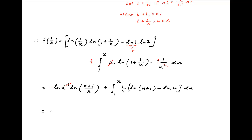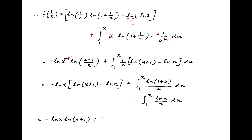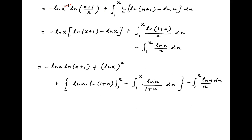Using properties of logarithms, this becomes −ln(x) times [ln(x+1) − ln(x)], plus the integral broken into two components: the first is the integral from 1 to x of ln(1+u)/u du. Integrating the next term by parts, we get (1/u), i.e., ln(u), times ln(1+u) from 1 to x, minus the integral from 1 to x of ln(u) times the derivative of ln(1+u), which is 1/(1+u), du, minus the final term as is.